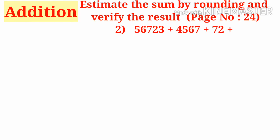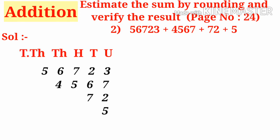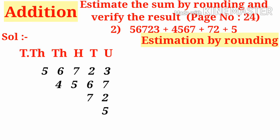Page number 24 in the textbook, second problem: 56723 plus 4567 plus 72 plus 5. For the solution, let us write the place values from right to left — that is units, tens, hundreds, thousands, and ten-thousands. Now write all the numbers in their place values exactly. Before doing the actual addition, let us estimate by rounding.